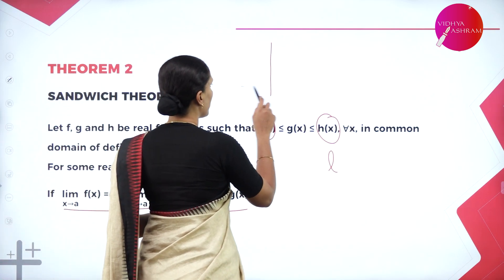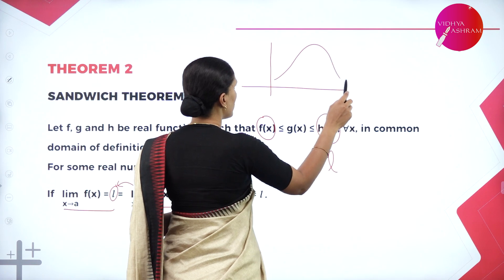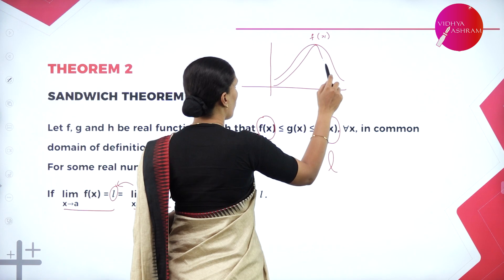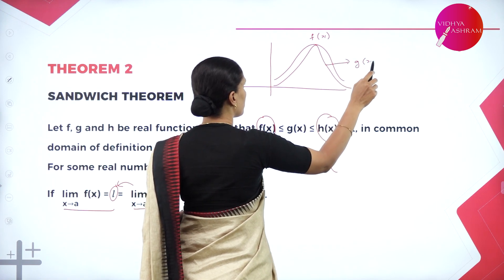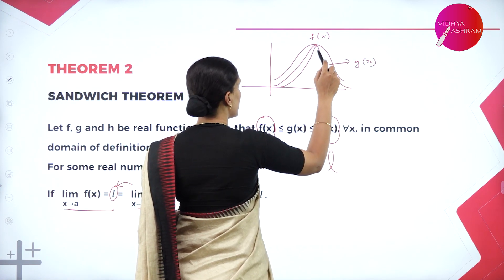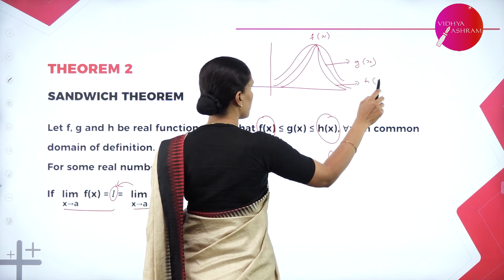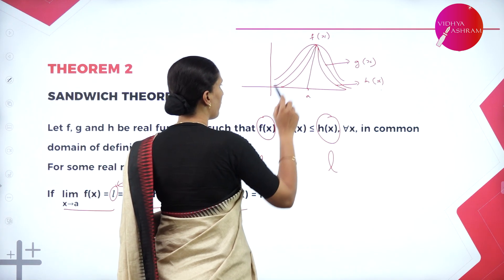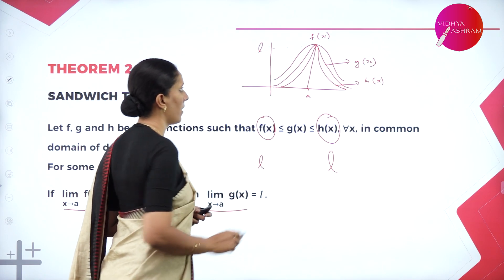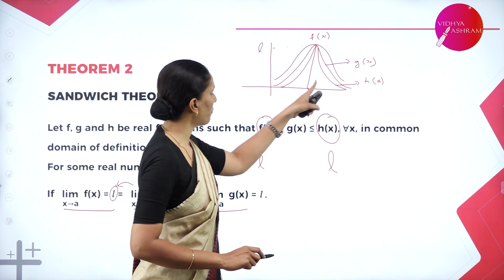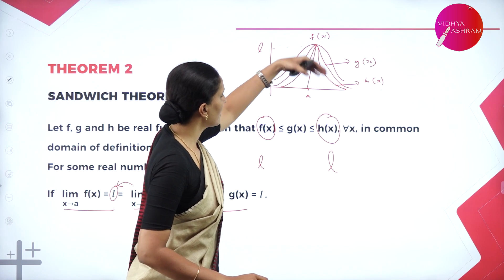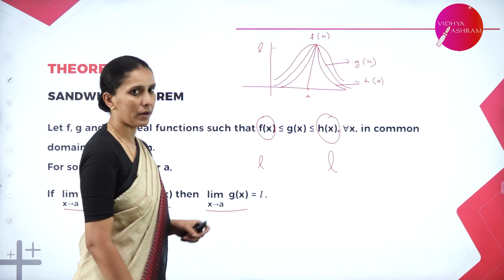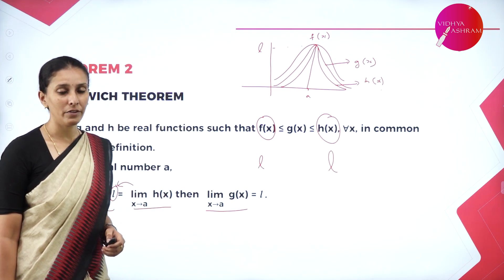If we take functions F of X, G of X, and H of X, as X approaches A, the value of F of X equals some L and H of X is also L. Since G of X is sandwiched between F of X and H of X, G of X also takes the limit value L. This theorem is called the sandwich theorem.